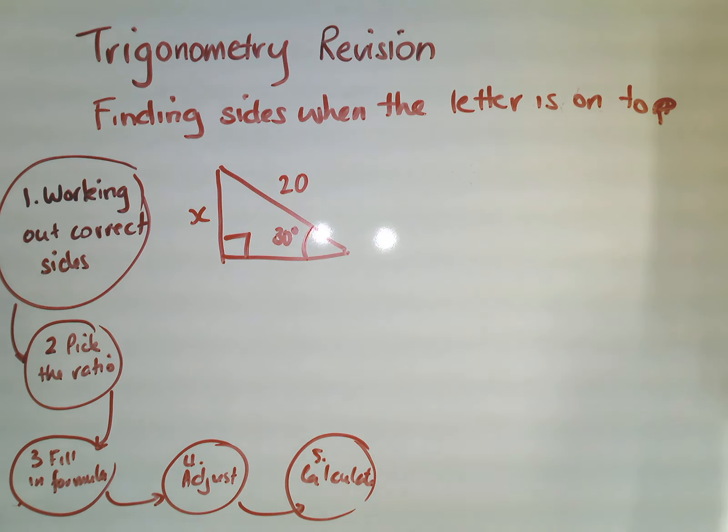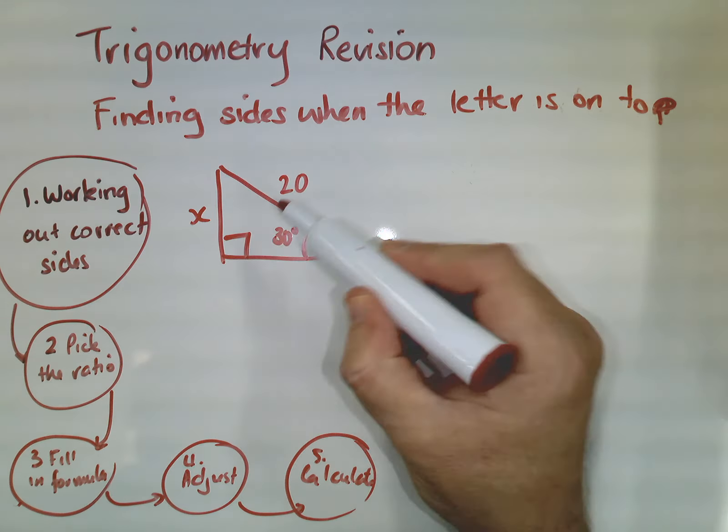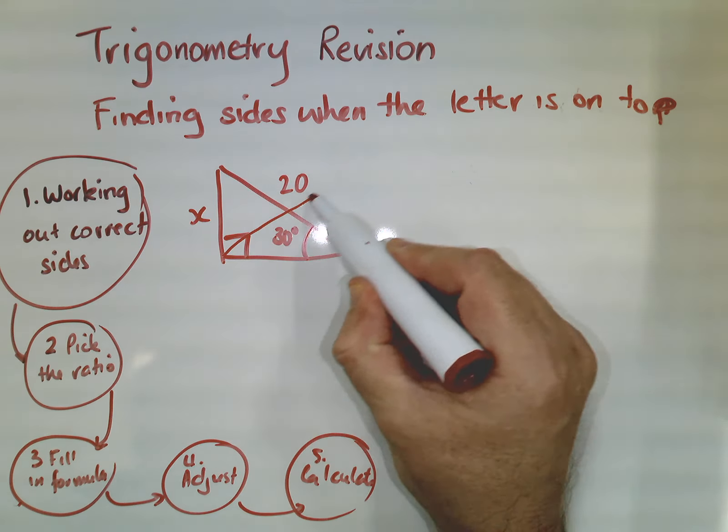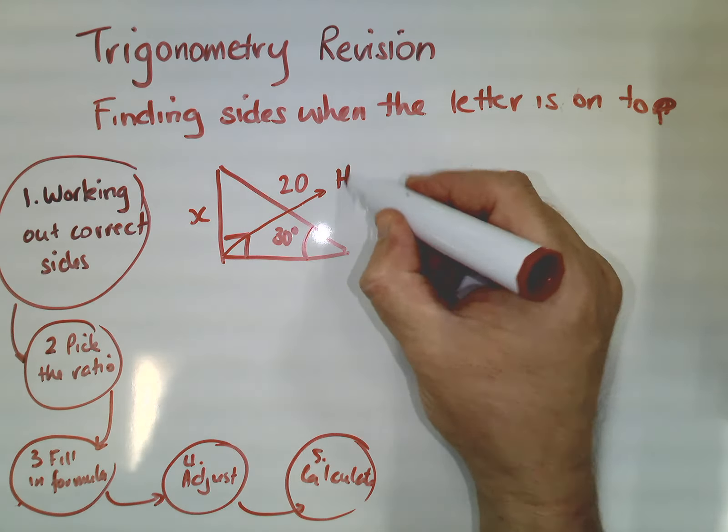So if we have a look here, the first thing that I always do when doing a trigonometry problem is I've got to work out the correct sides. To do that, I generally put my marker pen or my pencil in the right angle, draw a line across, and that will always lead me to my hypotenuse.